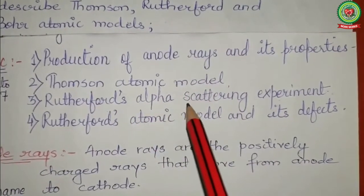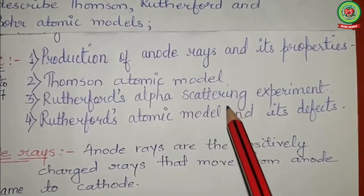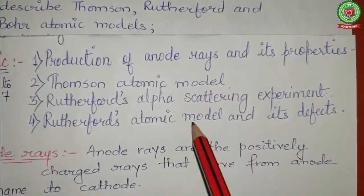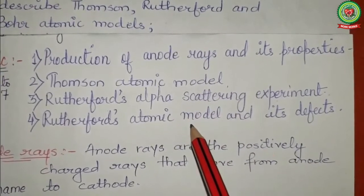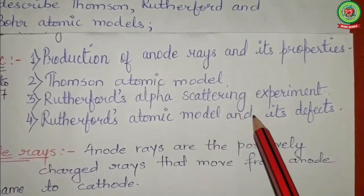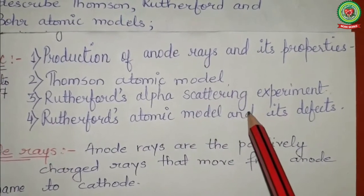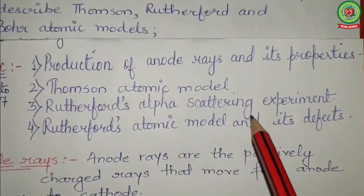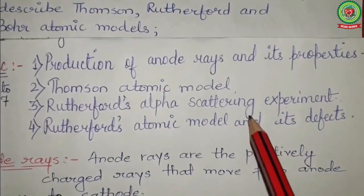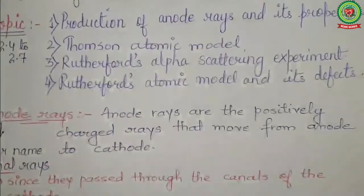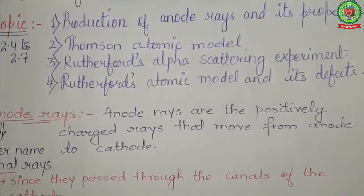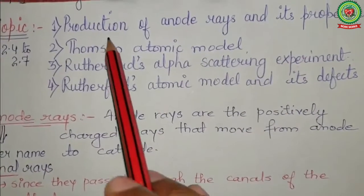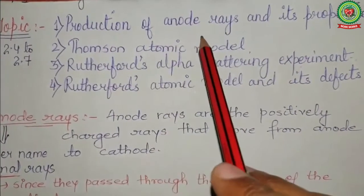Then we will move forward to Rutherford's alpha scattering experiment, followed by Rutherford's atomic model and its defects — that means the drawbacks of Rutherford's atomic model will be discussed in today's lecture. So let's start with the first topic: production of anode rays.